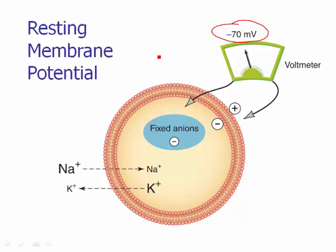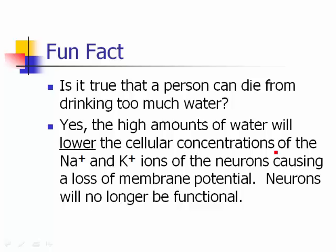The inside being negative at minus 70 millivolts is called the resting membrane potential, and there is a reason for it. Fun fact: a person can die from drinking too much water. High amounts of water dilute the cellular concentrations of sodium and potassium ions in neurons, causing a loss of membrane potential — neurons will no longer be functional. Those concentrations of 145 and 150 mM have to be maintained.